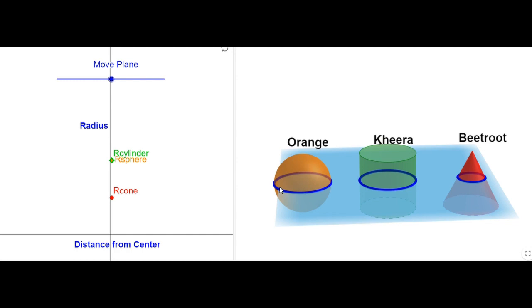Now you look at the sphere and the cone - the radius of the circles is getting changed. But here in our cylinder, it remains the same. The radius of all the circles remain the same.